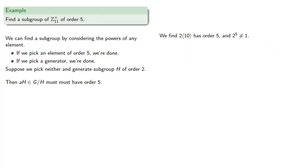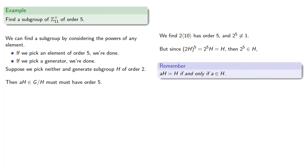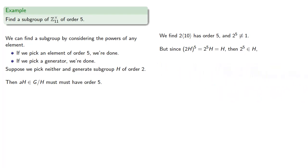Now let's think about this. (2H) to the 5th is 2 to the 5th times H, which equals H itself, because 2H has order 5. And so that means 2 to the 5th is an element of H — because AH equals H if and only if A itself is in H. We'll give it a name; let's say 2 to the 5th is h. And we can actually compute it: it turns out to be 10.